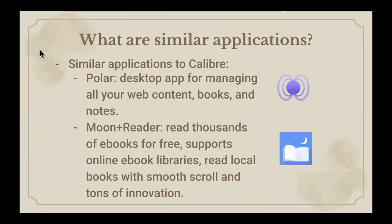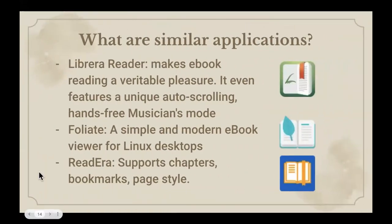Though Calibre is a great option, there are also some alternatives. Firstly, there's Polar, which is a desktop application that helps to manage all your web content, including books and notes. There's also Moon Plus Reader, which allows you to read thousands of eBooks for free — it supports online eBook libraries and also allows you to read local books with smooth scroll. There's also Libreira Reader, which makes eBook reading very pleasurable and even features a unique auto-scrolling, hands-free musicians mode, so if you're reading sheet music you'll be able to use this as you play your instrument.